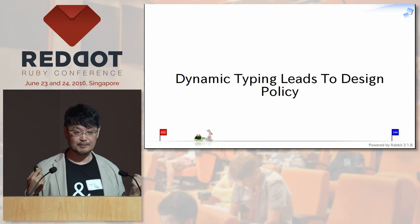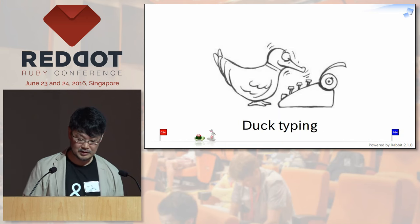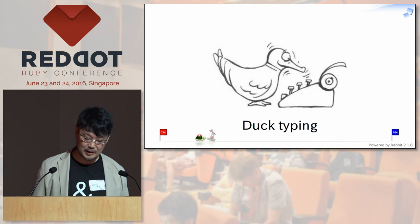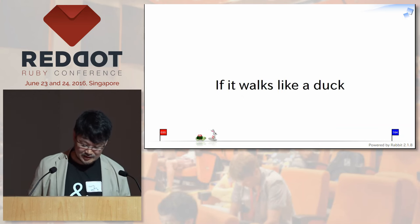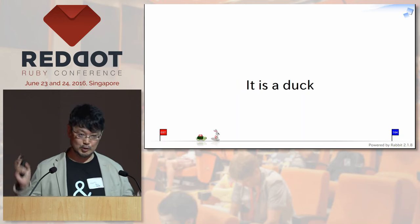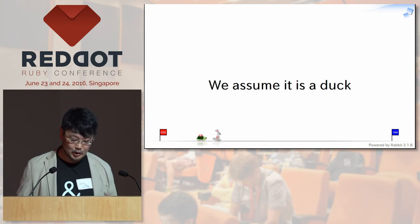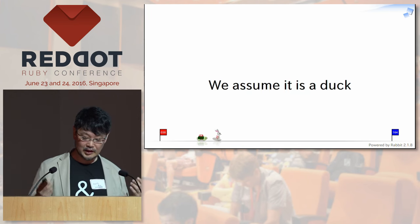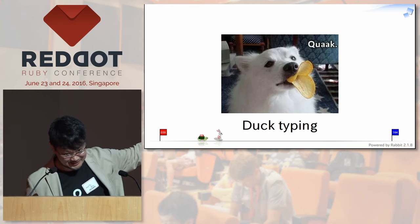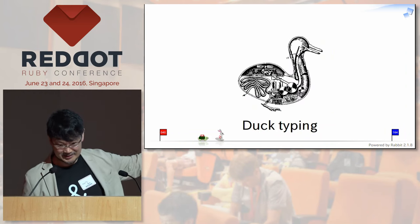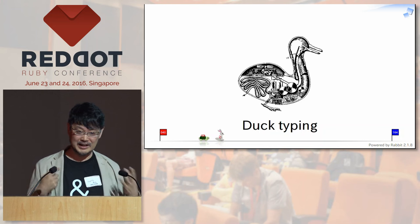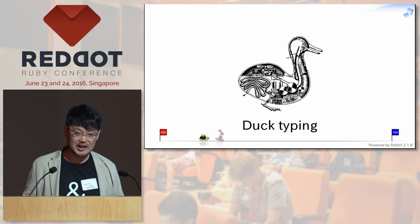Dynamic typing leads to the design policy known as duck typing. Duck typing is a very important factor in programming languages like Ruby. Duck typing means: if it works like a duck and it quacks like a duck, it is a duck. This is a very important principle in Ruby. We don't care about the internal detail of the data — we just care about how it behaves.